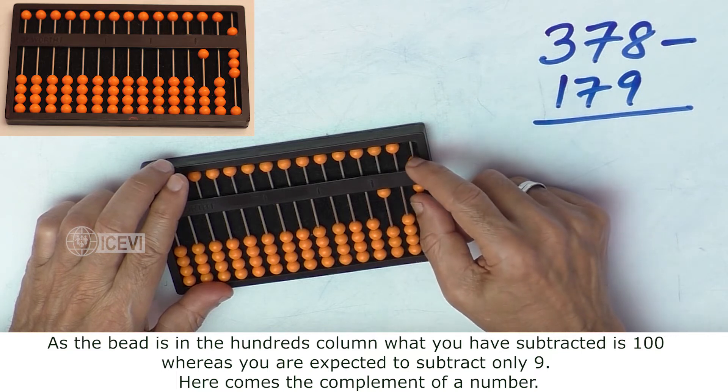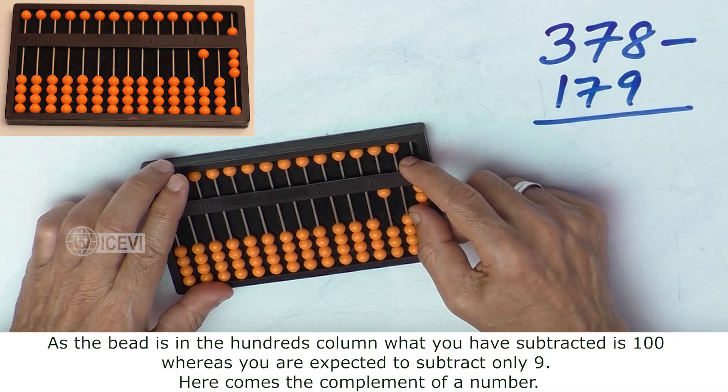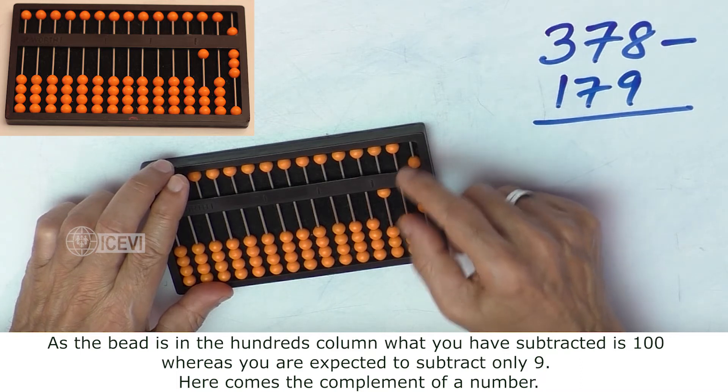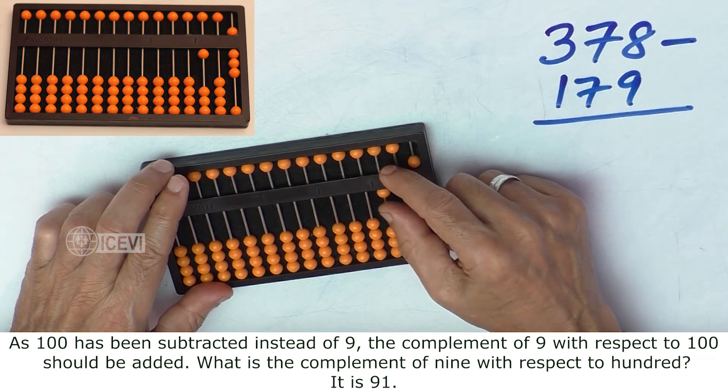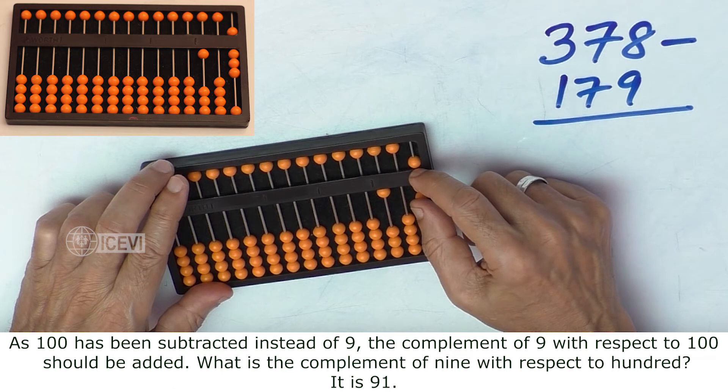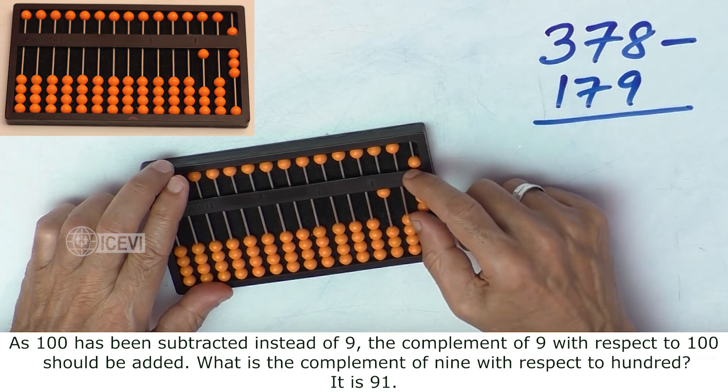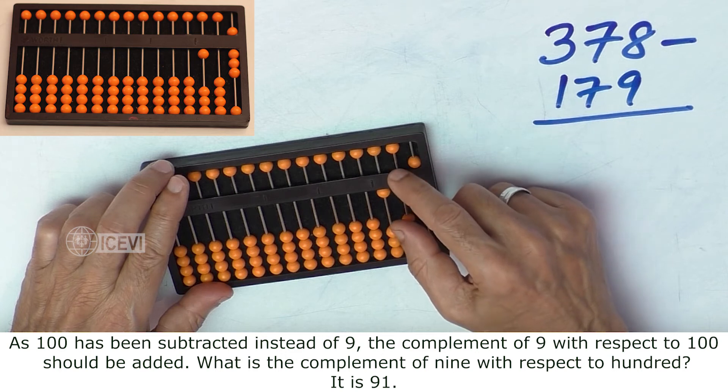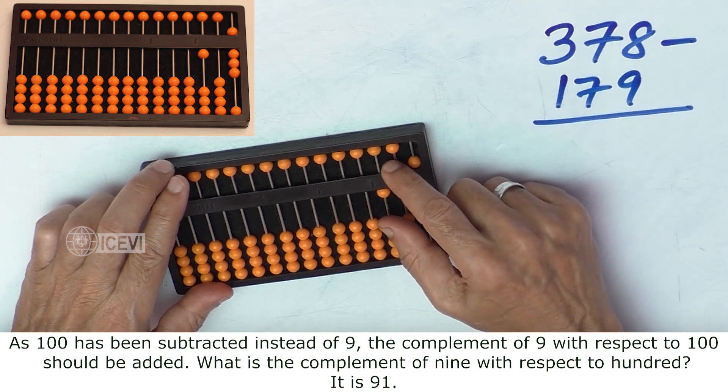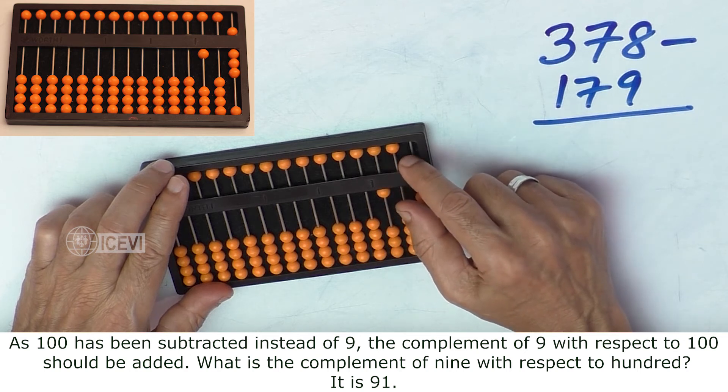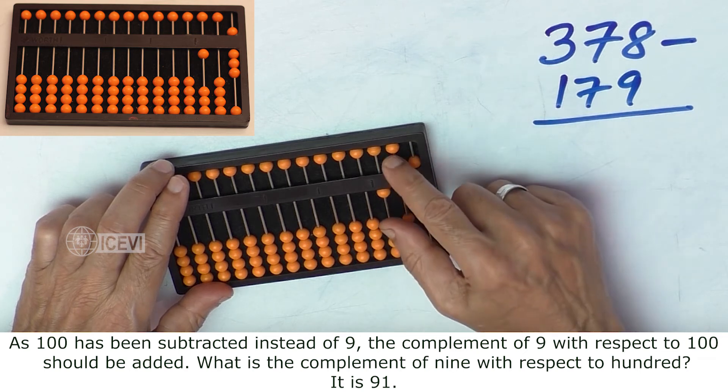Whereas you are expected to subtract only 9. Here comes the complement of a number. As 100 has been subtracted instead of 9, the complement of 9 with respect to 100 should be added. What is the complement of 9 with respect to 100? It is 91.